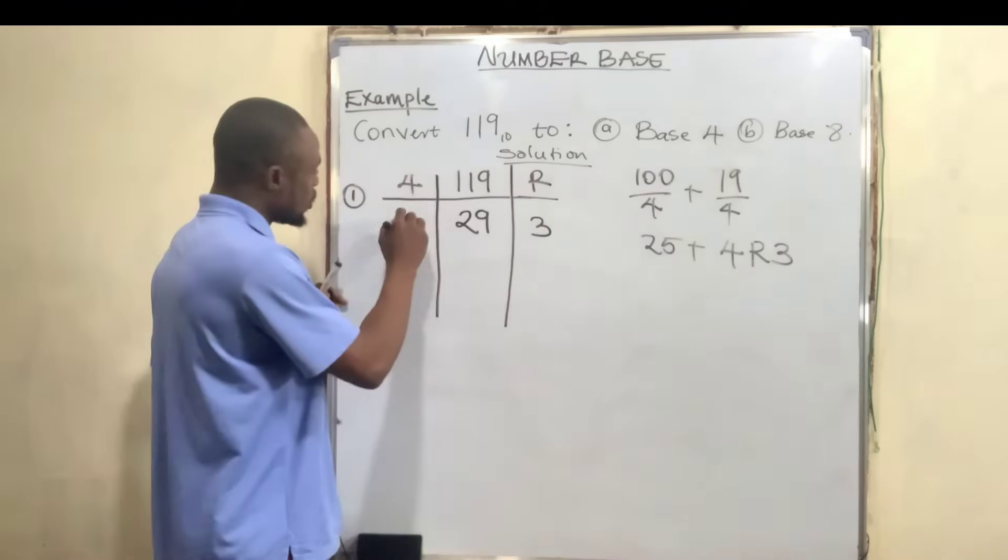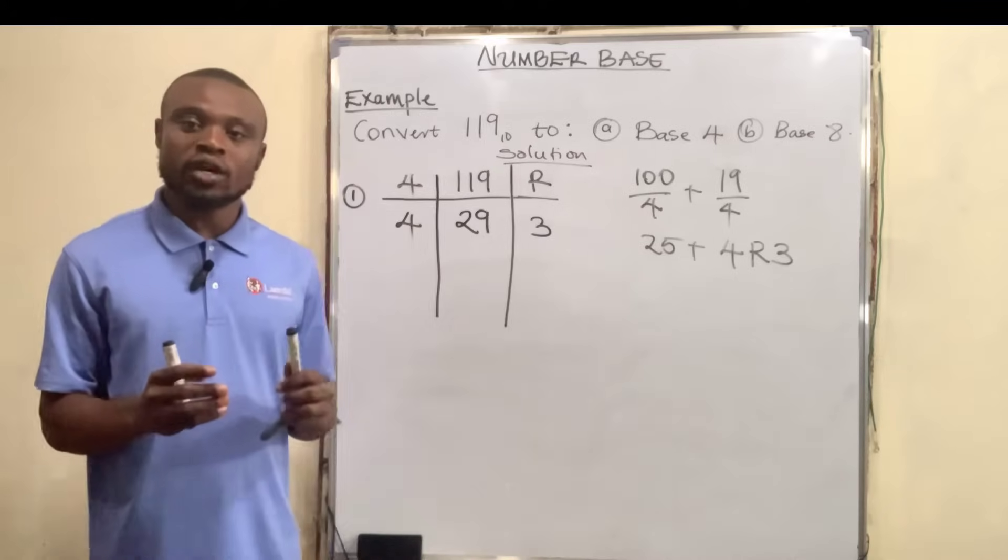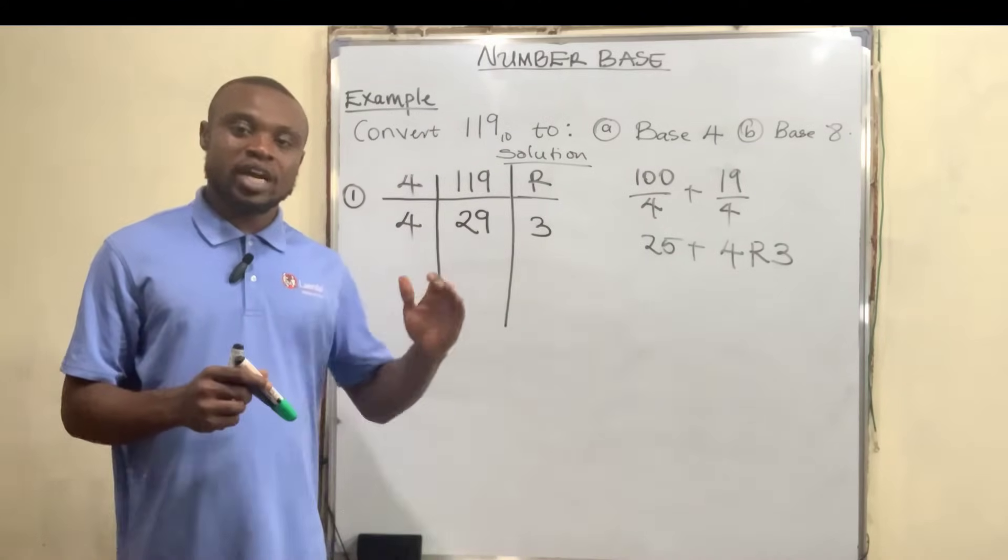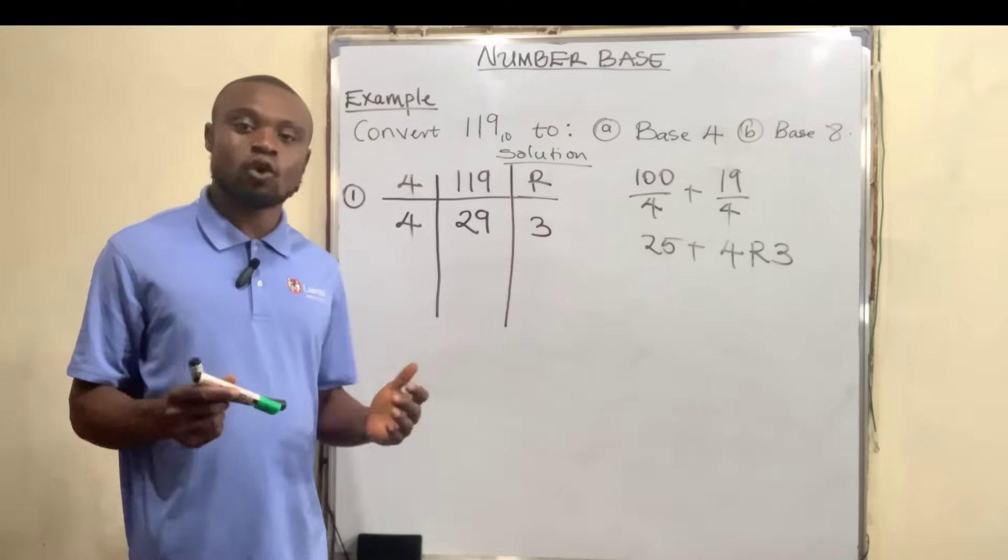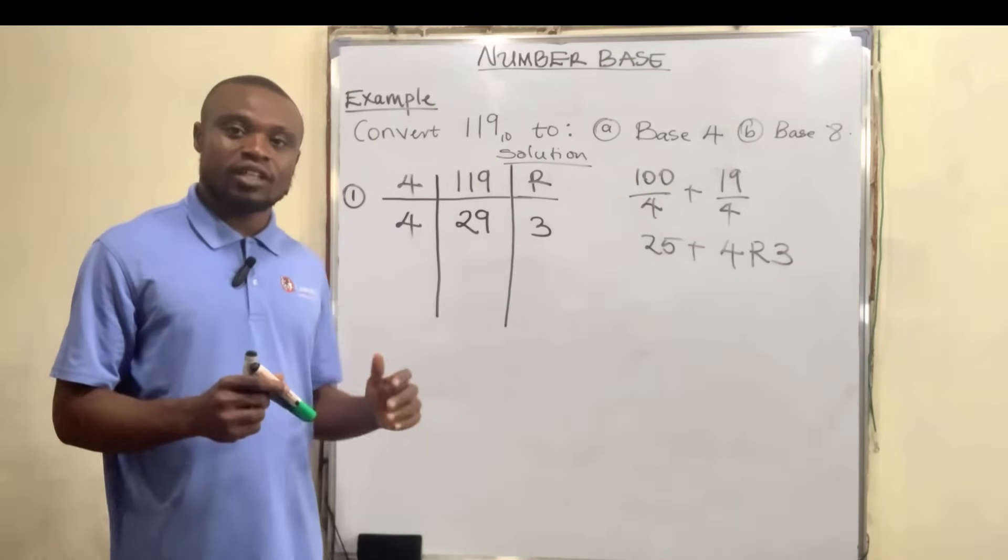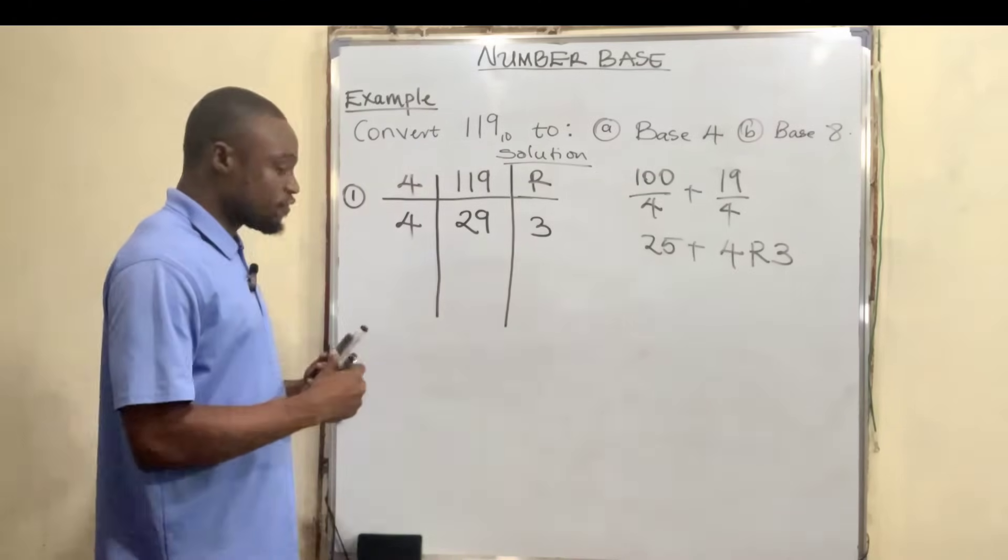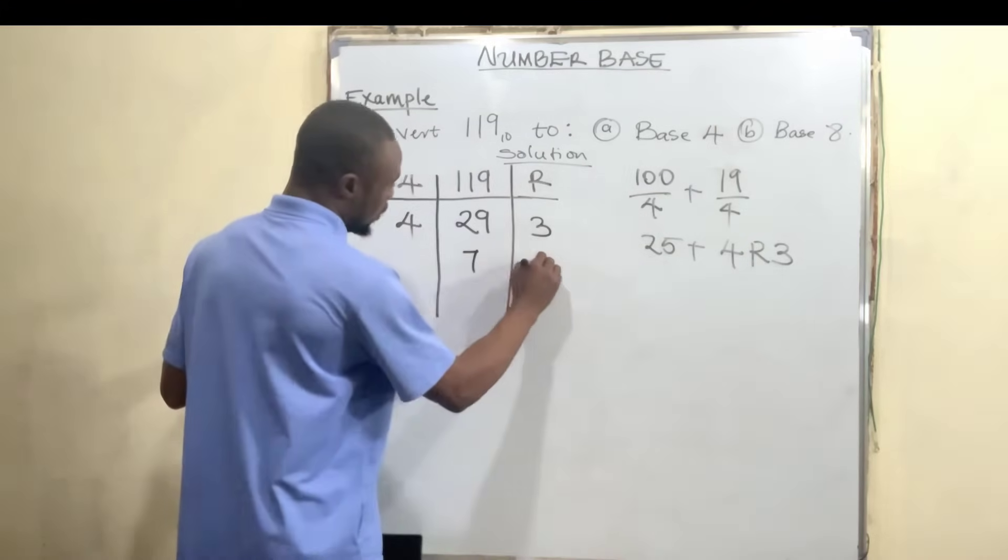29 divided by 4. We can split the number into two: 20 divided by 4 and 9 divided by 4. 20 divided by 4 is 5, 9 divided by 4 is 2 remainder 1. If you add 2 and 5, you have 7, so we have 7 remainder 1.